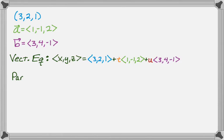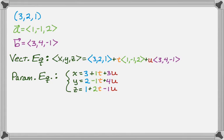And I can take this and I can turn it into the parametric equations, simply by reading off. So x is 3 plus 1t, and then plus 3u, and so on. So I get this.